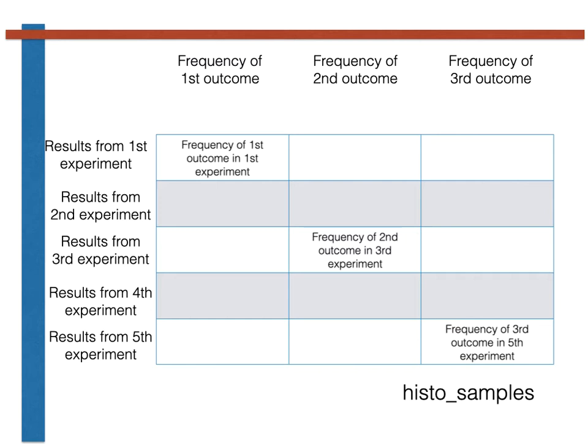We can continue this process ad infinitum, but we need to remember of course that in Python 0 is used to represent the first outcome, 1 is used to represent the second outcome, and so on.